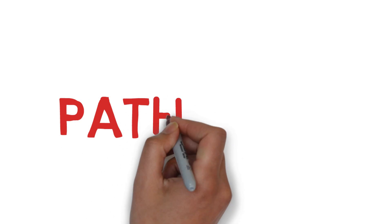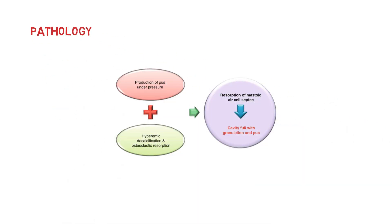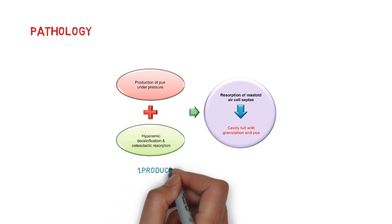What pathological processes are responsible for the formation of acute mastoiditis? Basically, this infection starts progressing toward the mucoperiosteal lining of the air cell systems, increasing the amount of pus production due to the large surface areas involved. This pus is drained from the tympanic membrane or the Eustachian tube.